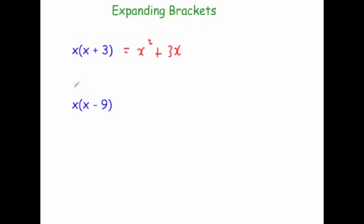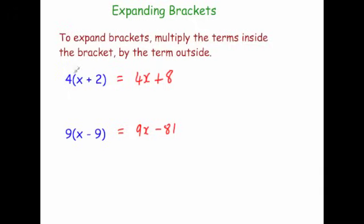And if we needed to expand x bracket x minus 9, we would do x times x — well x times x is x squared — and then x times minus 9, that's minus 9x. So to expand brackets you multiply what's inside by the number outside, and you get your expanded answer.